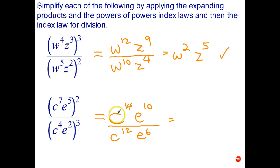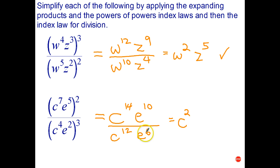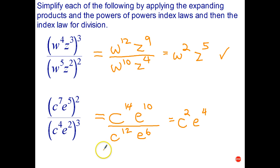We can now further simplify because we have the same base. C to the fourteenth divided by C to the twelfth is C to the fourteen minus twelve, which is two. E to the tenth divided by E to the sixth is E to the ten minus six, which is E to the four. In the next video we'll continue working with problems that involve more than one index law.